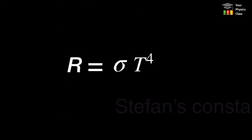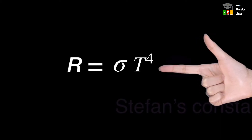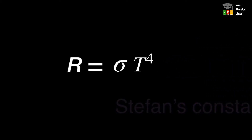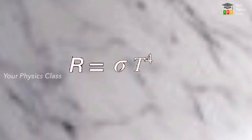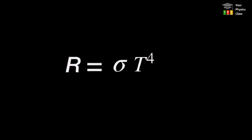The power radiated by a perfect black body depends only on its temperature and not on any other characteristics such as color, material, or nature of surface. So one thing is very clear: the emissive power of a perfect black body solely depends on its absolute temperature.